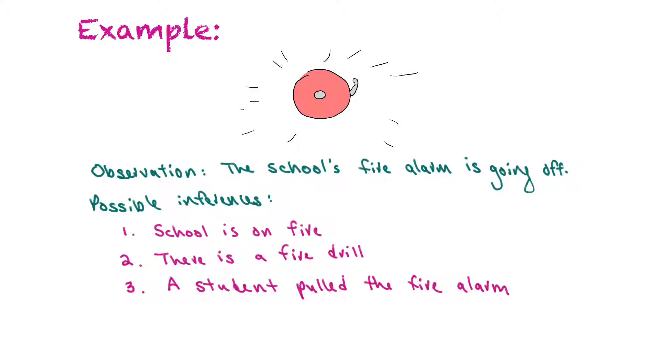Another inference could be that we're having a fire drill. And again, if you don't smell smoke, and nobody seems to be overly concerned, then you can probably safely assume that it's just a fire drill. And the third option might be that a student has pulled the fire alarm. So again, if there's no smoke, there's no flames, and maybe you see that the teachers or the principal are quite angry, perhaps someone has pulled the fire alarm.